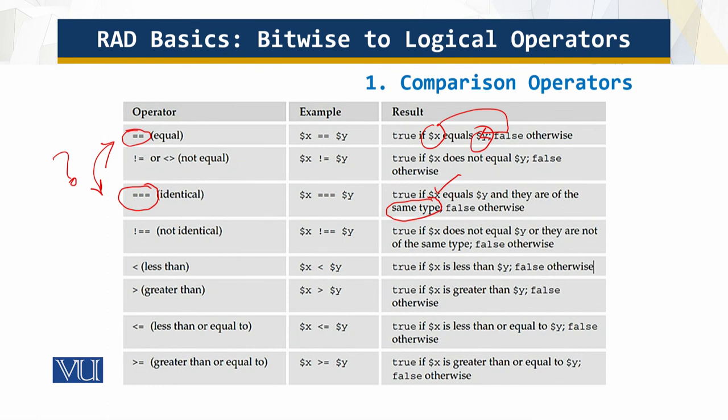Of course, this is clear: not identical, less than, greater than, and less than equal to. This is simple, this is straightforward. Now we move on and let's see what other interesting stuff we have.